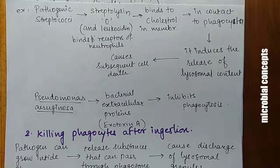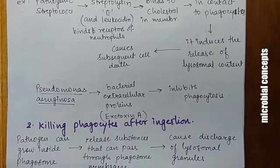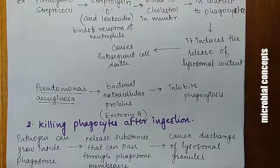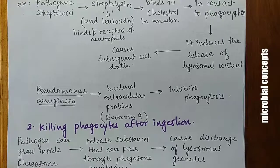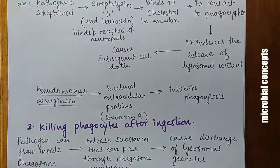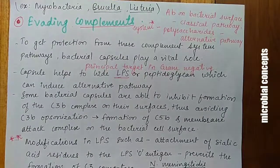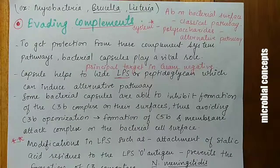For killing phagocytes after ingestion: pathogens can grow inside the phagosome and release substances that pass through the phagosome membrane, causing lysosomal granules to discharge. Release of lysosomal content is the key step — it can happen whether or not the pathogen has been ingested. Examples of bacteria using this after-ingestion strategy include Mycobacteria, Brucella, and Listeria. This completes the first main point: overcoming host phagocytic defense.